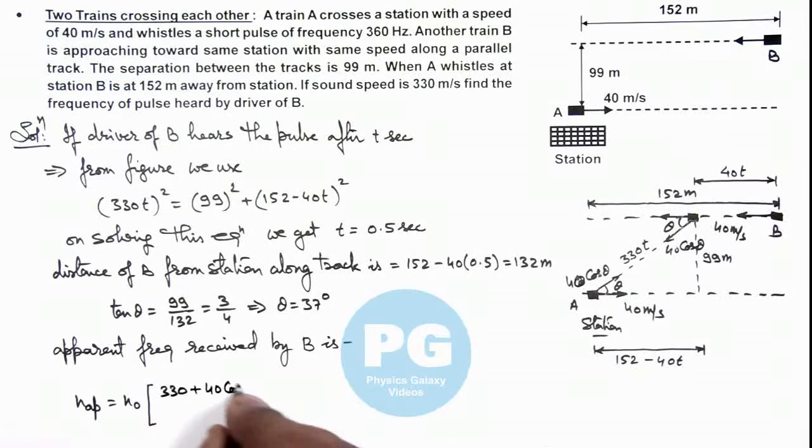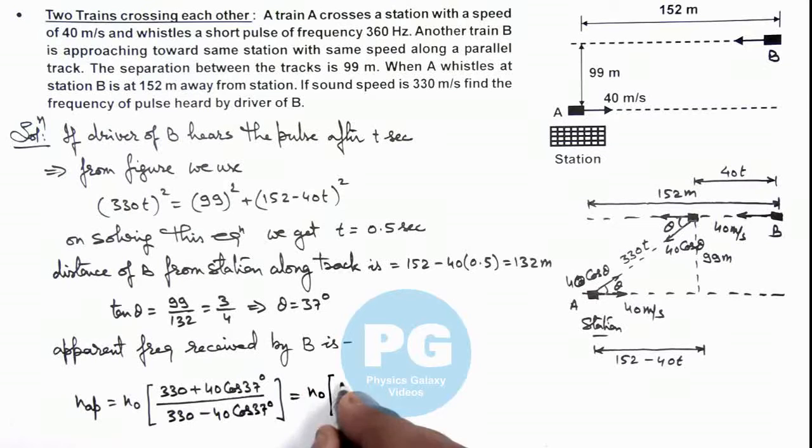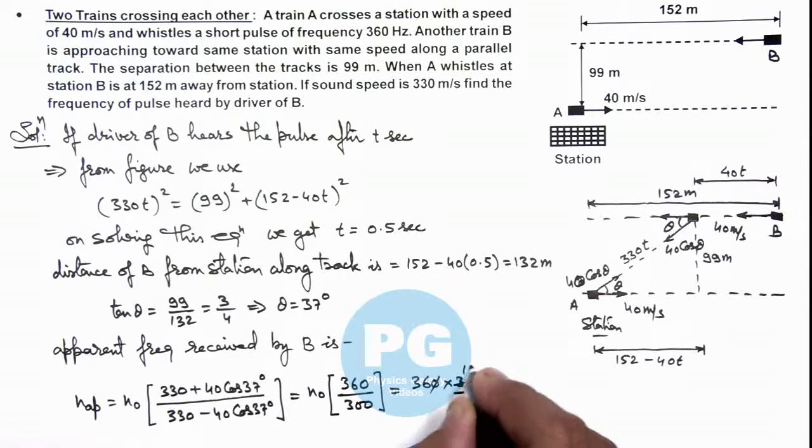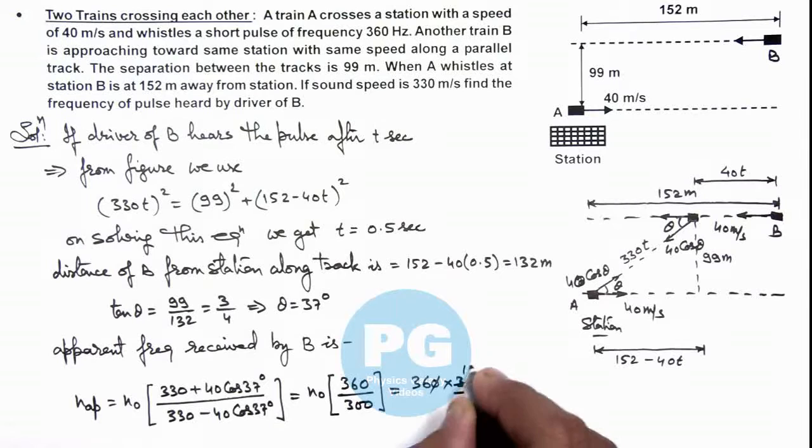Here we can write n₀ multiplied by (330 + 40 cos 37°) divided by (330 - 40 cos 37°). On numerically solving this, we'll get n₀ multiplied by 360 divided by 300. And if we substitute the value of n₀ here, the initial frequency of pulse is given as 360 hertz. So this is 360 multiplied by 360 by 300. If we cancel this, this is 12, and 36 multiplied by 12 here will be 432 hertz. That is the result of this problem.